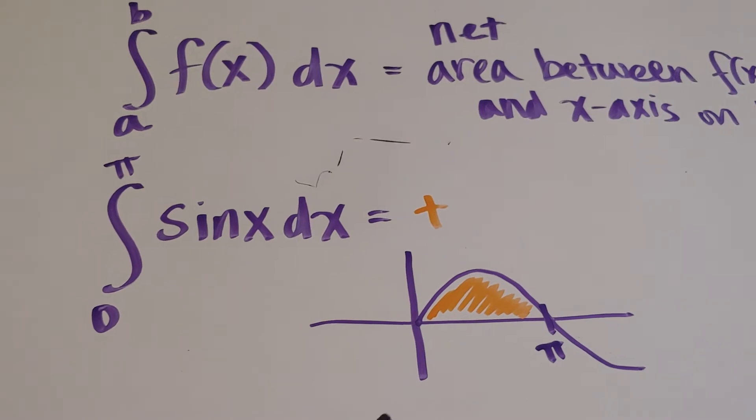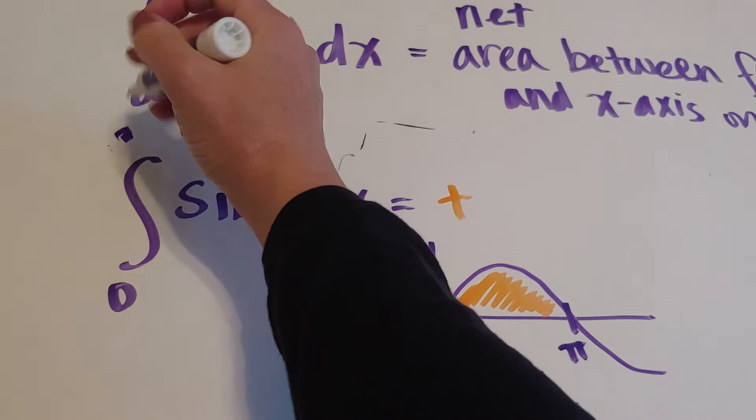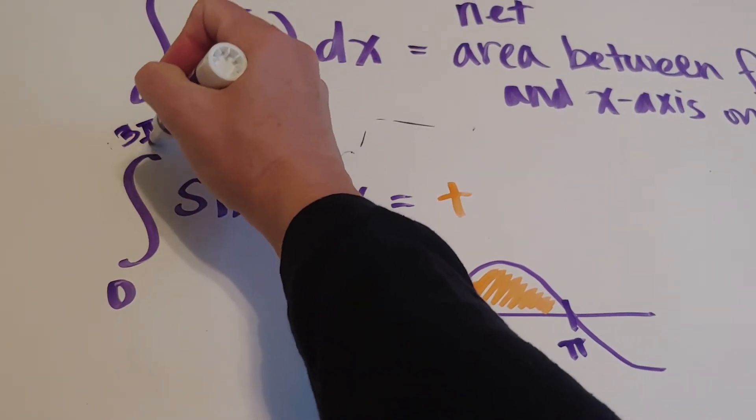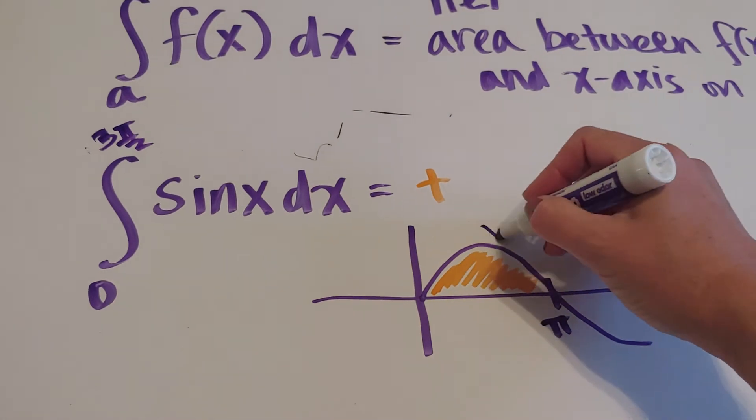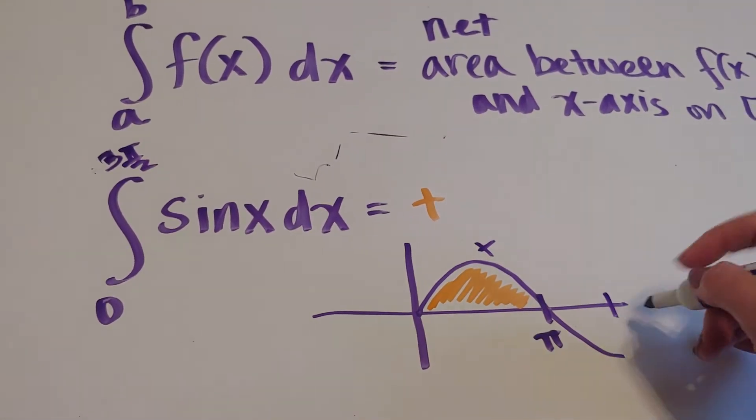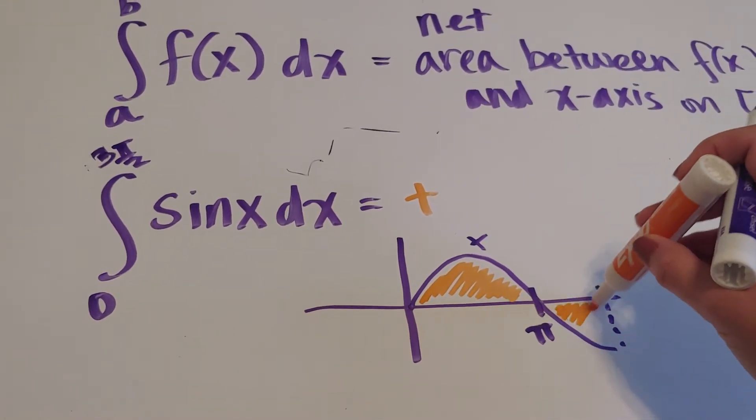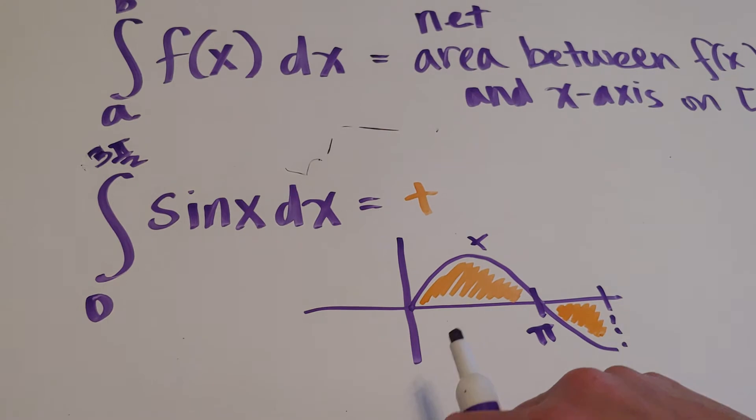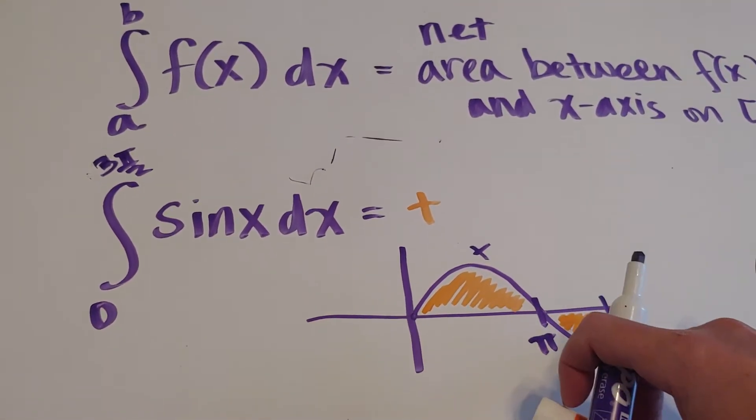If, however, I changed it to 0 to 3π/2, what we would have is this positive area here, but we'd also have this negative area here. So what this would actually do is take the positive area plus this negative area and then give us our net answer.